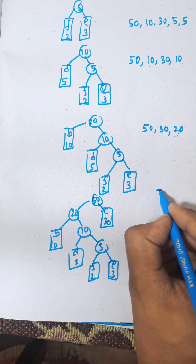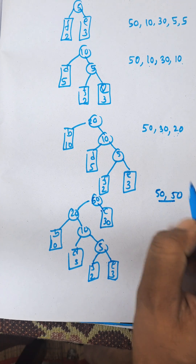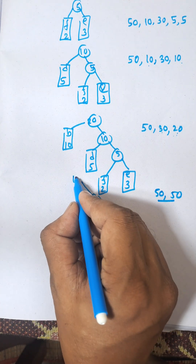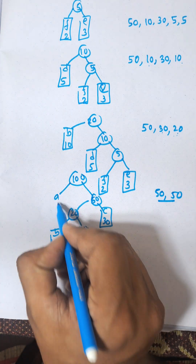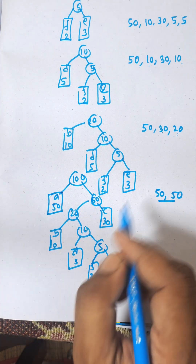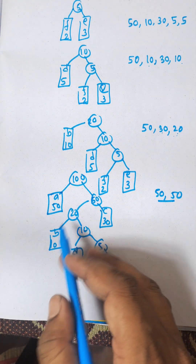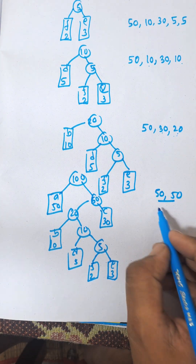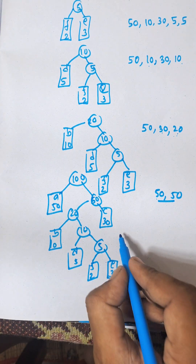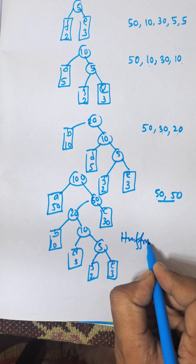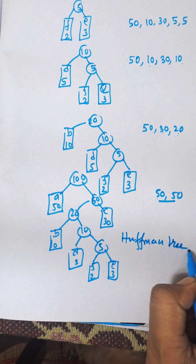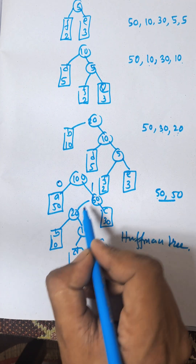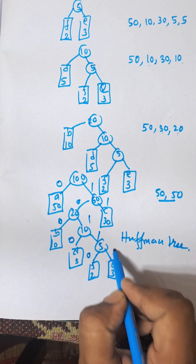Now the last nodes are 50 and 50. One 50 is for A. So we construct the final tree — 100 at the root, with A(50) on one side. In the last step we combined 50, 30, 20, and 50 to get 100. This is known as the Huffman tree, and the Huffman coding assigns 0 and 1 labels along the branches.